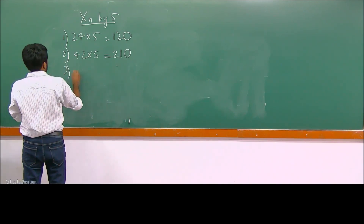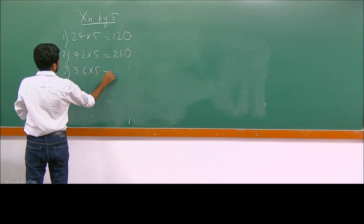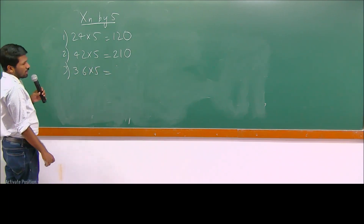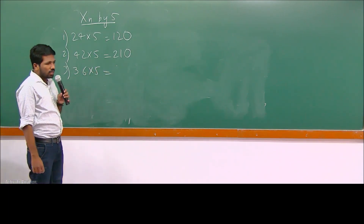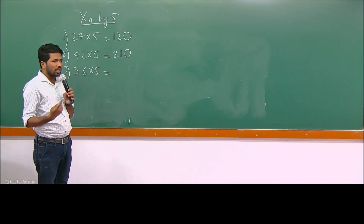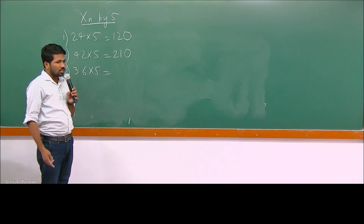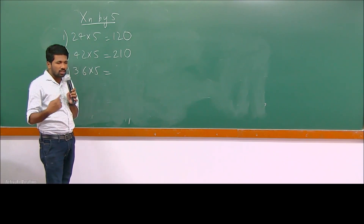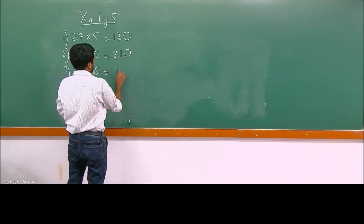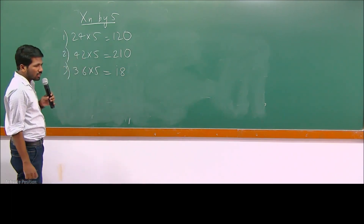If it is 3.6 into 5: taking half of 3.6 is 1.8. Putting a 0 at the end means shifting 1 decimal to the right. So 1.8 shifted 1 decimal to the right gives 18. Therefore 3.6 into 5 is 18.